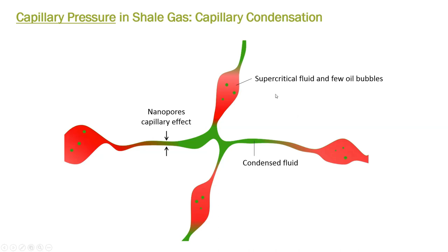In shale gas, we have a variation of pores. It's not like you have the matrix with consistent type of pores. We have nanopores, quite small, and we have macropores, which relatively to these pores are large. So in the same temperature and pressure of the reservoir, the fluids here and there behave totally different.